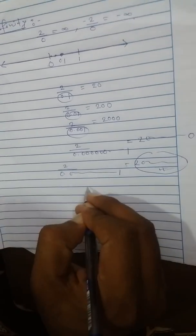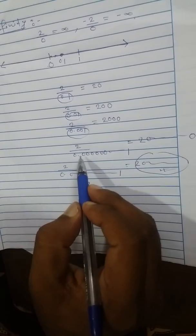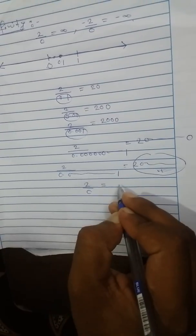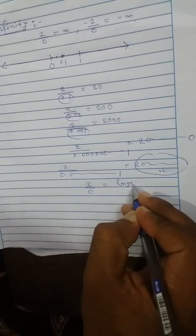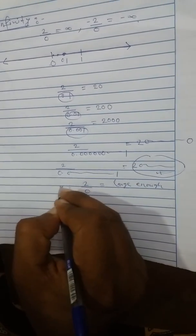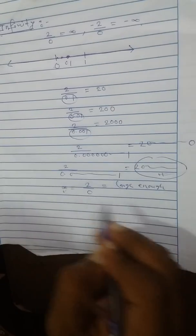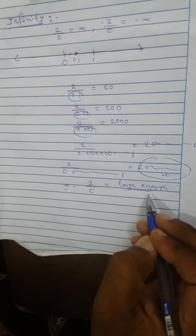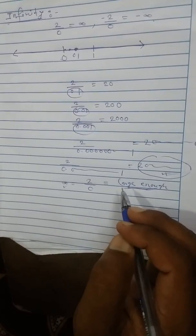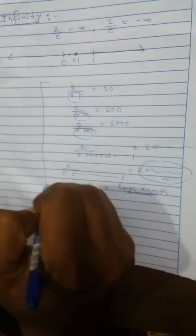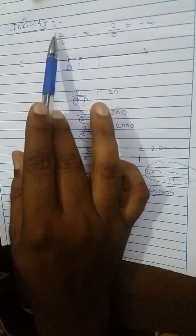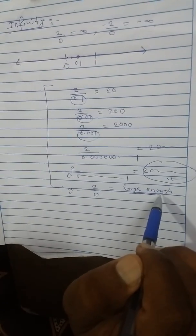Let us think: if we divide by zero, what happens? If very close to zero gives an enormous number, then dividing by zero will give a result that is large enough, huge enough. And this is infinity. Two upon zero is infinity. So infinity is a huge enough, large enough, non-memorable number from where we cannot move forward.